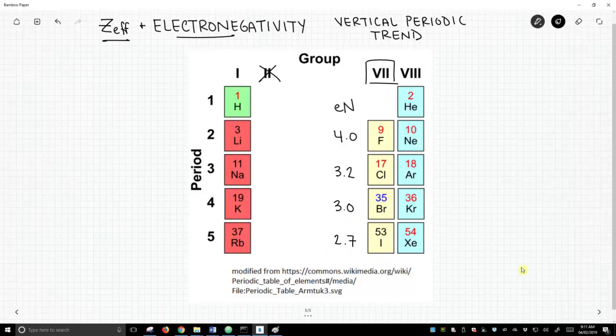Now, one thing we've said is that effective nuclear charge influences our electronegativity. But since these are all group 7 elements, that means that they have 7 valence electrons, and they have an effective nuclear charge of 7.